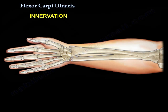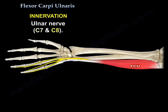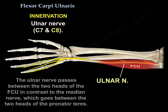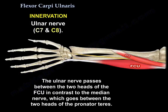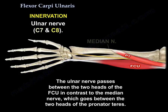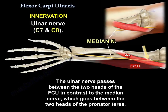Innervation: the ulnar nerve. The ulnar nerve passes between the two heads of the Flexor Carpi Ulnaris, in contrast to the median nerve which goes between the two heads of the pronator teres.